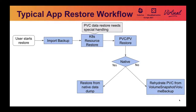The restore workflow is the reverse. The user starts a restore and imports the backup, including both the Kubernetes resource piece as well as the data piece. The PVC data needs to be handled specially. PVC and PV data restoration branches into two pieces: if the backup turns out to be a native application dump, then use the native application tools to restore from the dump; otherwise, rehydrate the PVC from the volume snapshot or volume backup.